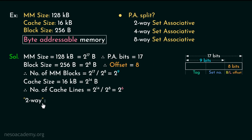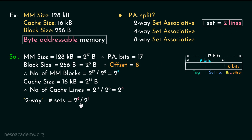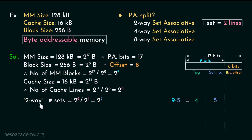Starting with the 2-way: the number of sets can be found by dividing the cache lines, which is 2 to the power 6, by the set size. In case of 2-way, the set size is 2 lines, so we divide by 2 to the power 1, which results in 2 to the power 5. Therefore 5 bits will be used for the set number portion, and the tag bits are found by subtracting the set number bits from the block number bits: 9 minus 5 equals 4. Therefore for a 2-way set associative cache the physical address split is 4 tag bits, 5 set number bits, and 8 bits for block or line offset.